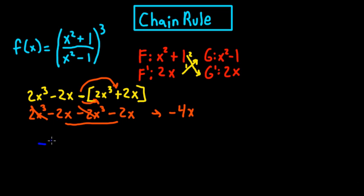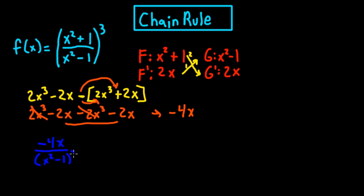So now we've got negative 4x. Remember, when you do this, all of this is going to be under x squared minus 1, squared. So this is what it's going to look like as of right now: negative 4x over x squared minus 1, squared.